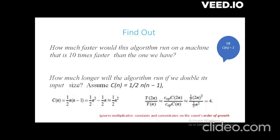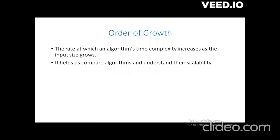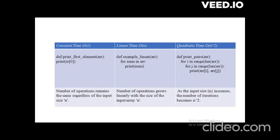What do we mean by count's order of growth? It is how fast, or in what order, your algorithm's running time increases as the count increases. We generally know that when input size increases, complexity also increases. But understanding the order in which it increases helps us compare algorithms and understand their scalability. We have taken three different examples for this.